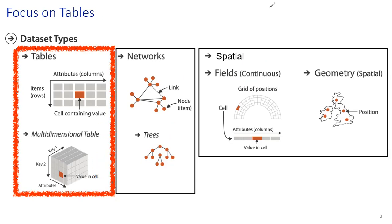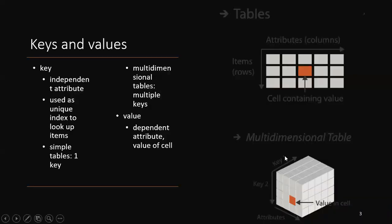Let's move to keys and values. Keys are the independent attribute, used as a unique index to look up items. Simple tables have one key, and dimensional tables have multiple keys.